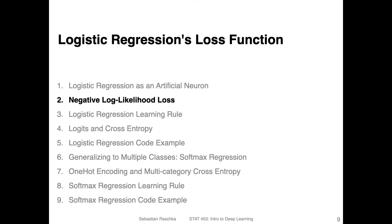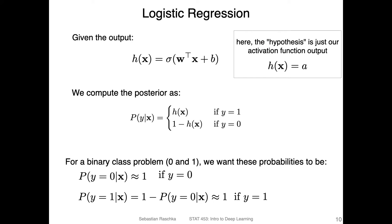Let's now take a look at how we compute the loss function for the logistic regression model, the so-called negative log likelihood loss. This is a slide I already showed at the end of the previous video. There are two things going on: one is how we compute this probability, and the other is what we want this probability to be.